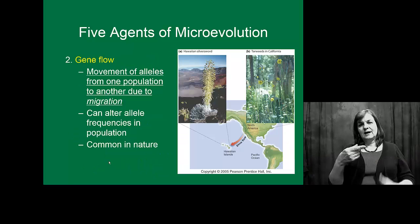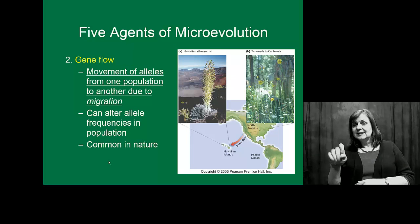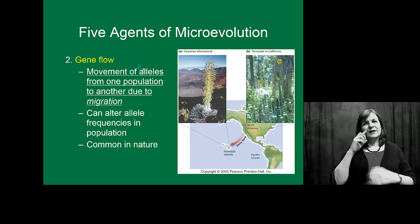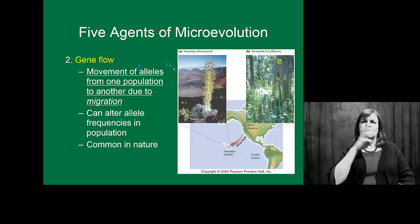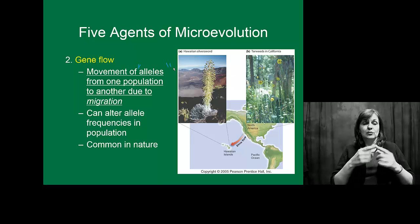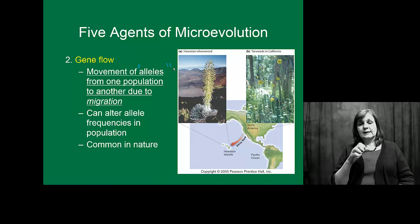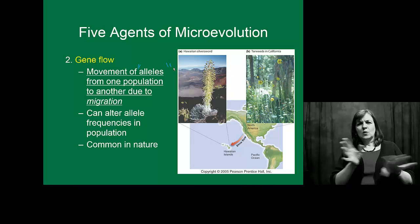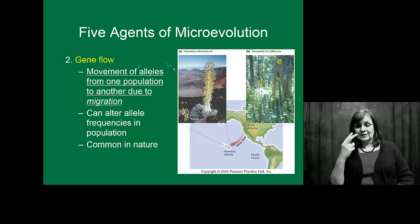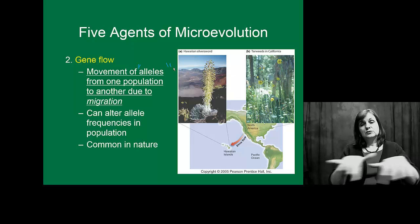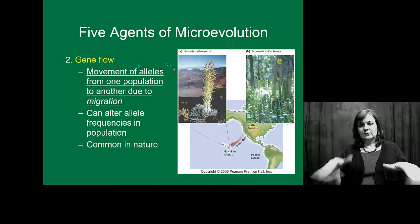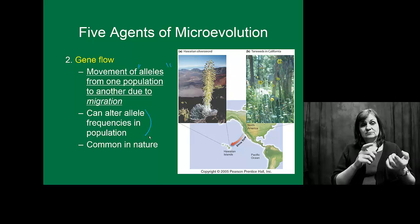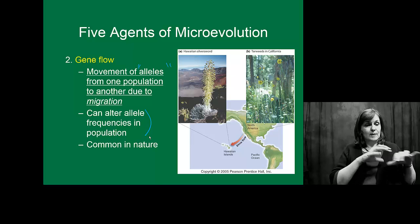Gene flow is the movement of alleles from one population to another. Think about the movement of either individuals as a whole, or the movement of gametes. If you're looking at something that's wind pollinated, you could look at the movement of pollen between populations. The idea of gene flow certainly can alter frequencies in a population, because we get a lot of interaction between populations.